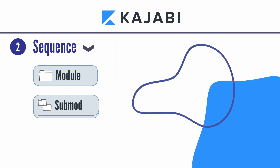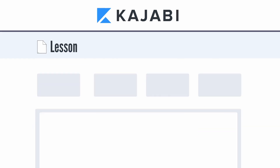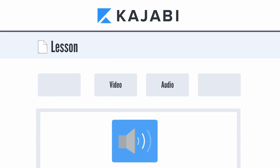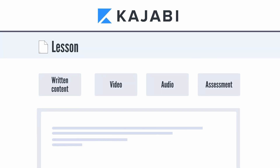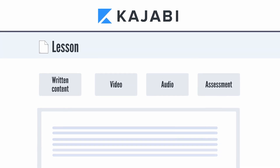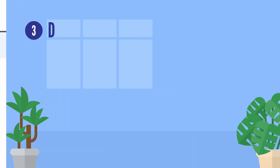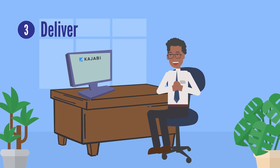This is how Kajabi hosts and sequences your course. Kajabi breaks it down into modules, sub-modules, and lessons. You can add a video, add audio, add an assessment, and add written content. Below that, you can also add files for learners to download.